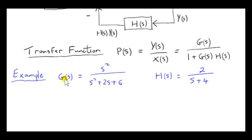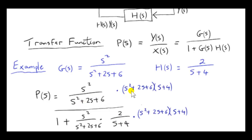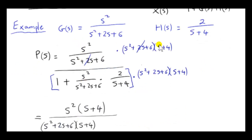Let's take this example. Suppose that G(s) and H(s) are given by these two expressions. So here is our transfer function: G(s) over 1 plus G(s) times H(s). We simplify this expression by multiplying above and below by the product of the denominators that appear. So on top we get s² times (s + 4), and we multiply by the fraction here, which effectively cancels terms out, leaving just 2s².